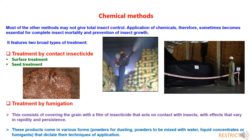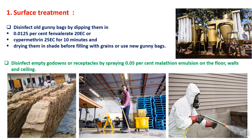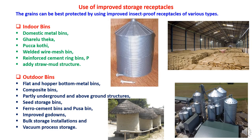Chemical products come in various forms like powders for dusting, powders to be mixed with water, liquid concentrates, or fumigants. Under chemical surface treatment, gunny bags are disinfected by dipping them in 0.025% fenvalerate 20 EC or cypermethrin 25 EC for 10 minutes, and these gunny bags should be dried in shade before filling with grains. As an alternative, new gunny bags can be used to prevent infestation. Empty godowns or receptacles can be disinfected by spraying 0.05% malathion emulsion on floors, walls, and ceiling. Surface treatment is given to different godown structures, walls, floors, damaged portions, or gunny bags to prevent insect pest infestations.